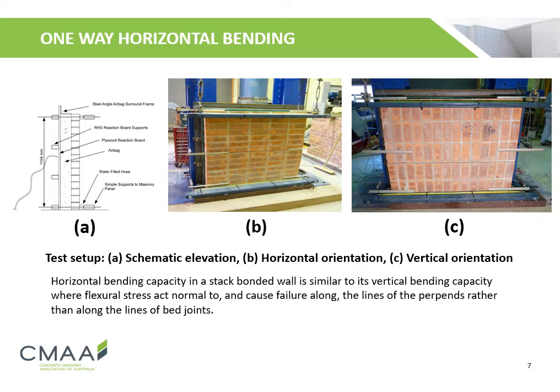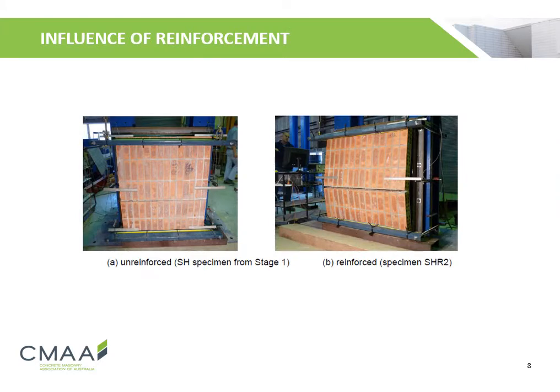Horizontal bending capacity in a stack bonded wall is similar to its vertical bending capacity, where flexural stress acts normal to and causes failure along the lines of the perpends rather than along the lines of the bed joints. In the unreinforced stack bonded wall, the bending capacity is limited and governed by the bond strength of the perpen joints — brittle failure occurred along the line of the perpends, resulting in sudden and complete loss of capacity. In the reinforced stack bonded wall, there was a more ductile response and greater deflection was measured.